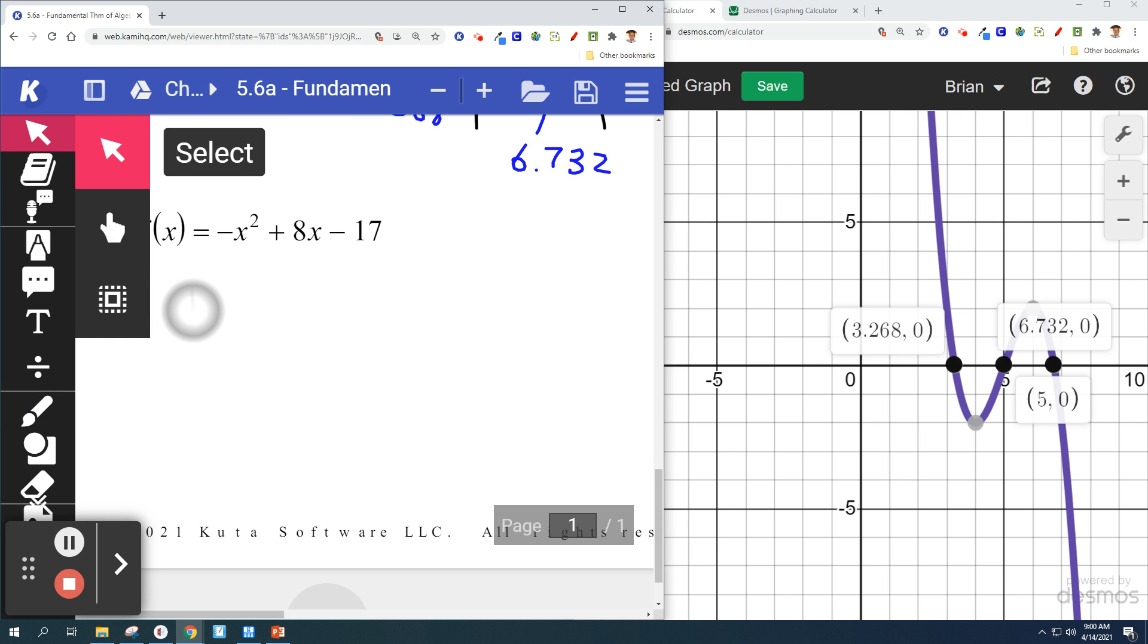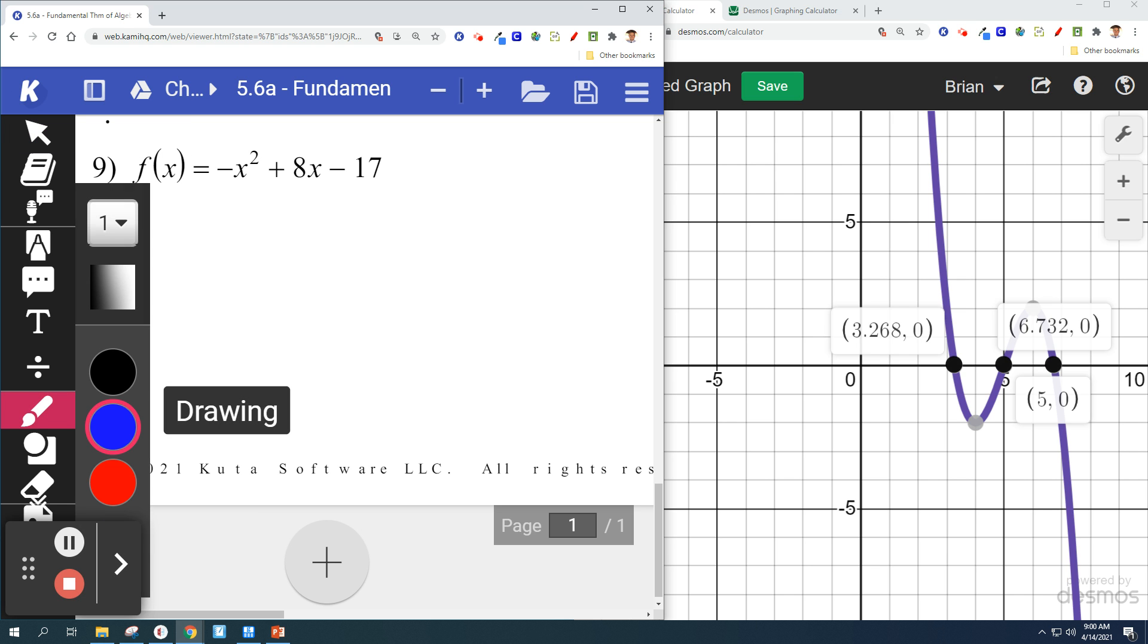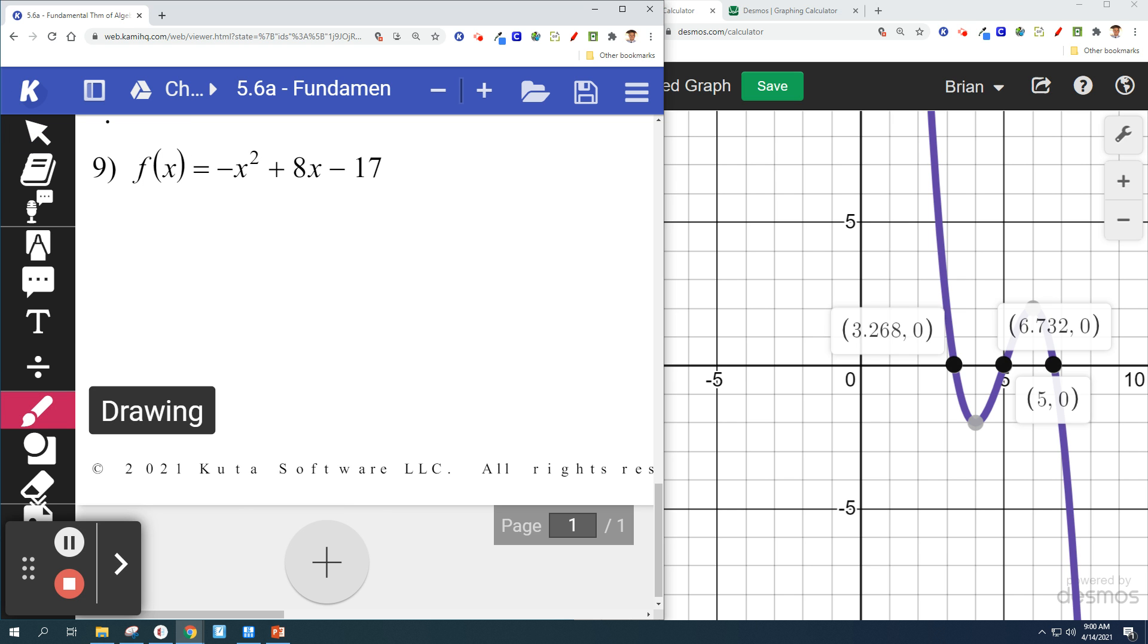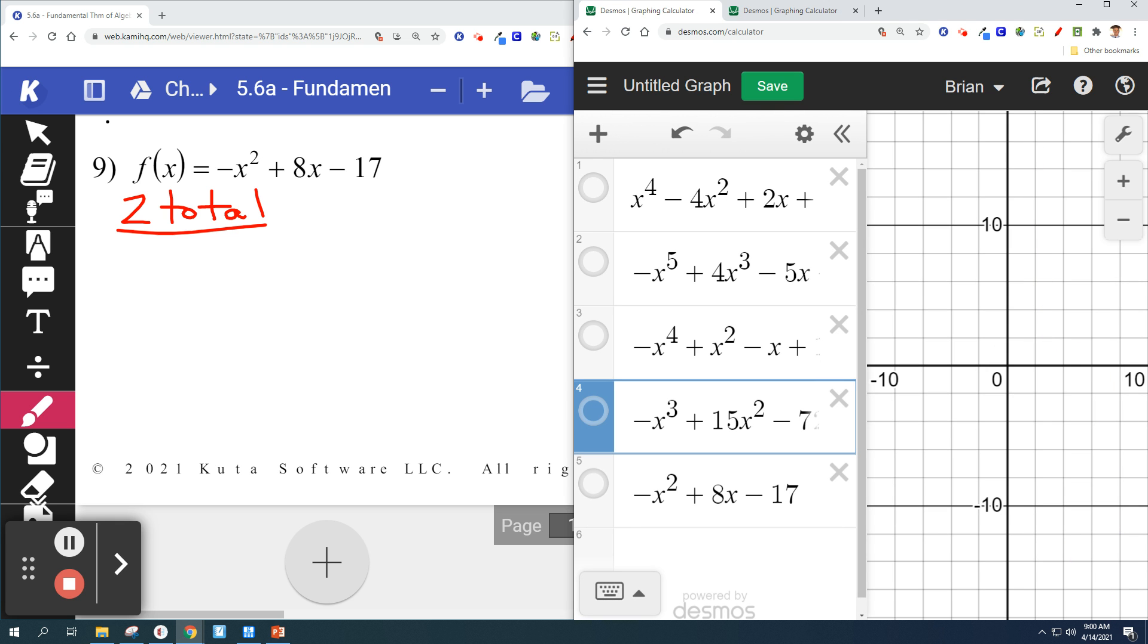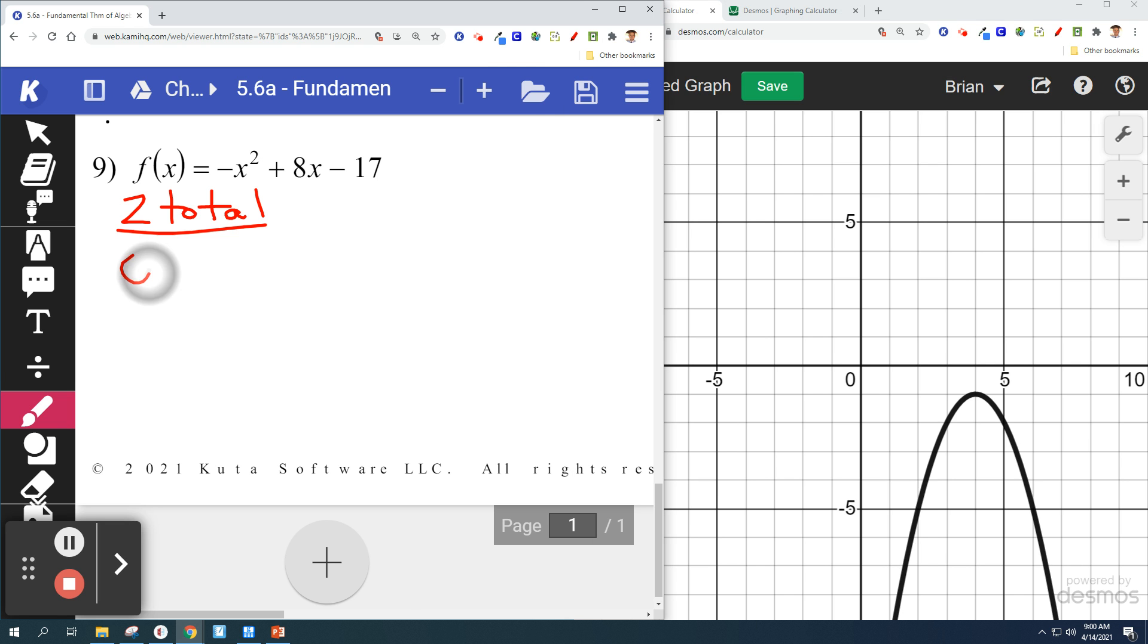Let's do one more. We can see there are two solutions total. So we look at the graph. Zero reals, right? It doesn't cross the x-intercept, so there can't be any reals. There are no real solutions. So you've done graphs before where you said no solution. No solution is a little bit misleading. It's no real solutions and two imaginary solutions here. And we'll deal with that. We'll deal with that here in the next couple of days.